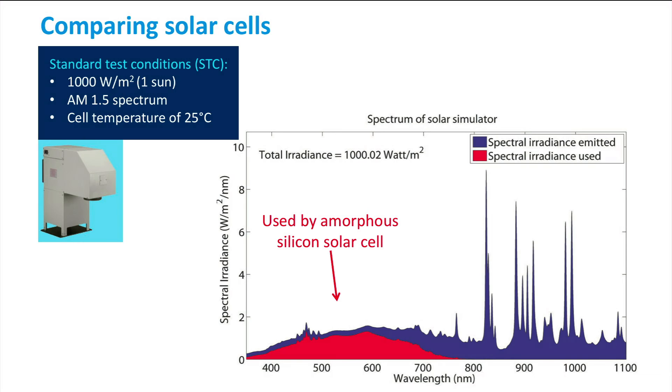The spectral irradiance received from such a solar simulator is shown here. The blue area depicts the emitted irradiance, while the red area depicts the part of the spectrum used by an amorphous silicon solar cell. If we overlay the AM1.5 spectrum in this spectral range, we find that the solar simulator provides a very good approximation of the AM1.5 spectrum in the range used by the solar cell.